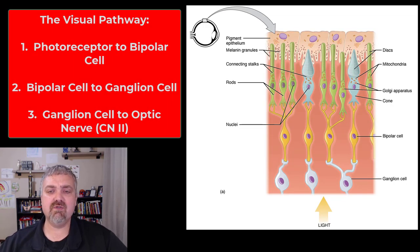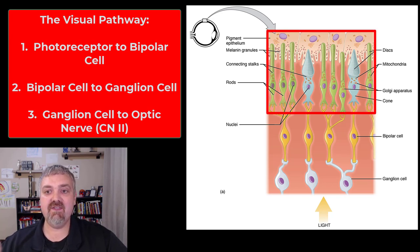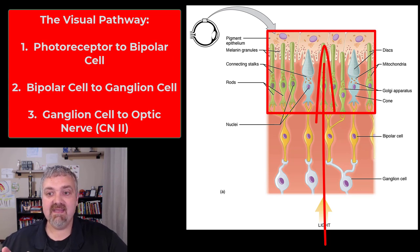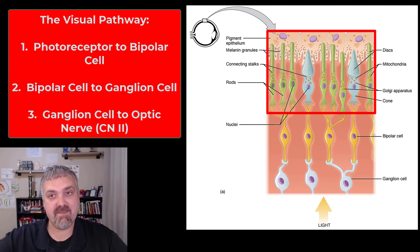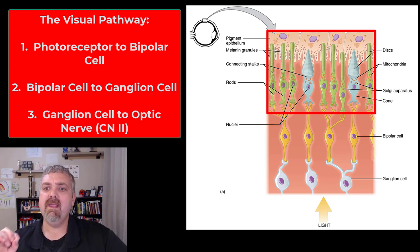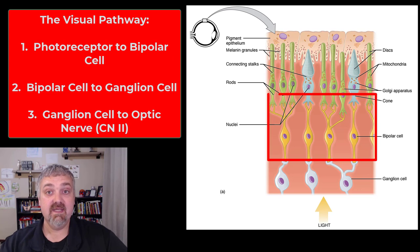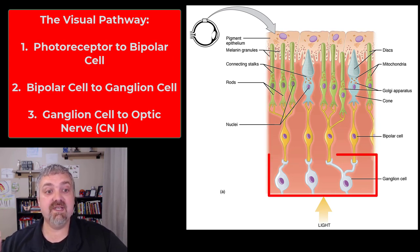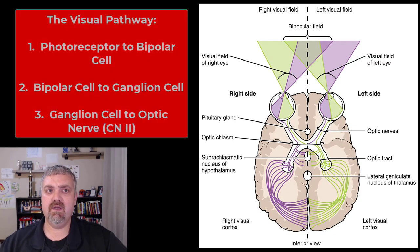Once these photoreceptors are triggered, the visual pathway begins. Light actually travels through where the ganglion and bipolar cells are to strike the photoreceptors, and then the signal gets sent back — it's almost like the eye is backwards. Once this message triggers the photoreceptors, it's going to synapse in two places: from the photoreceptors to the bipolar cells, then from the bipolar cells to the ganglion cells.